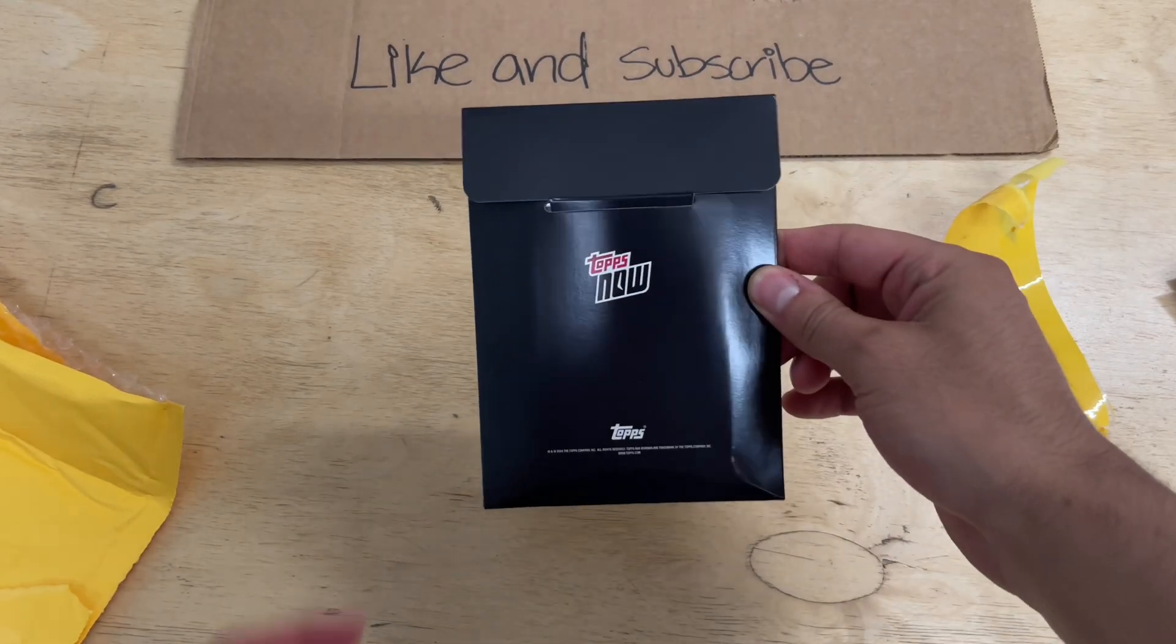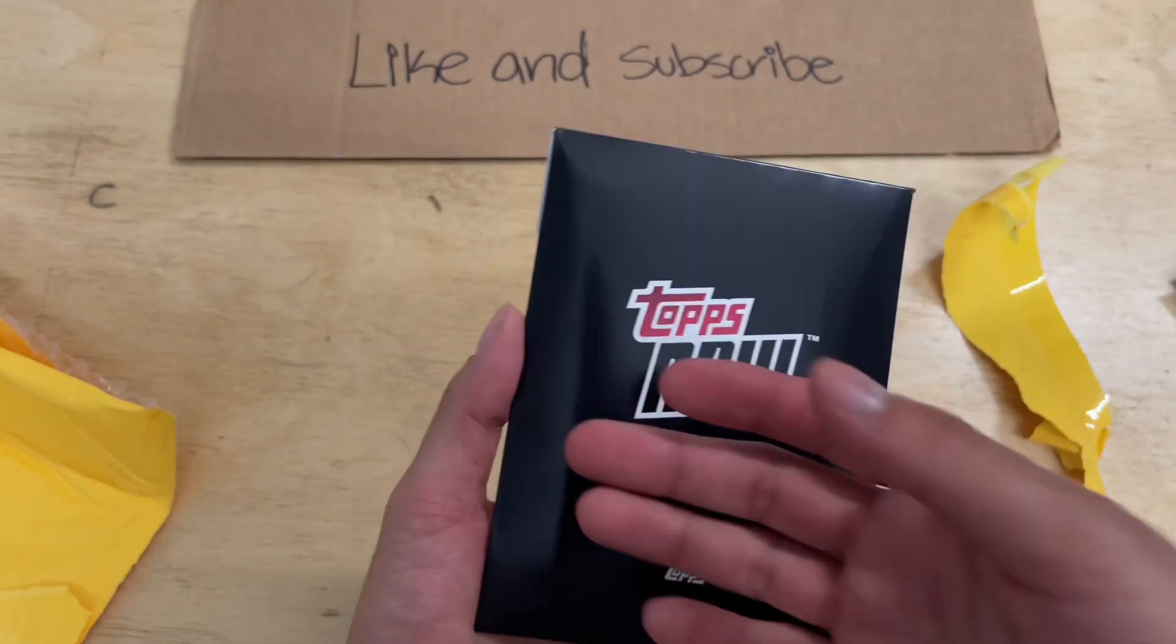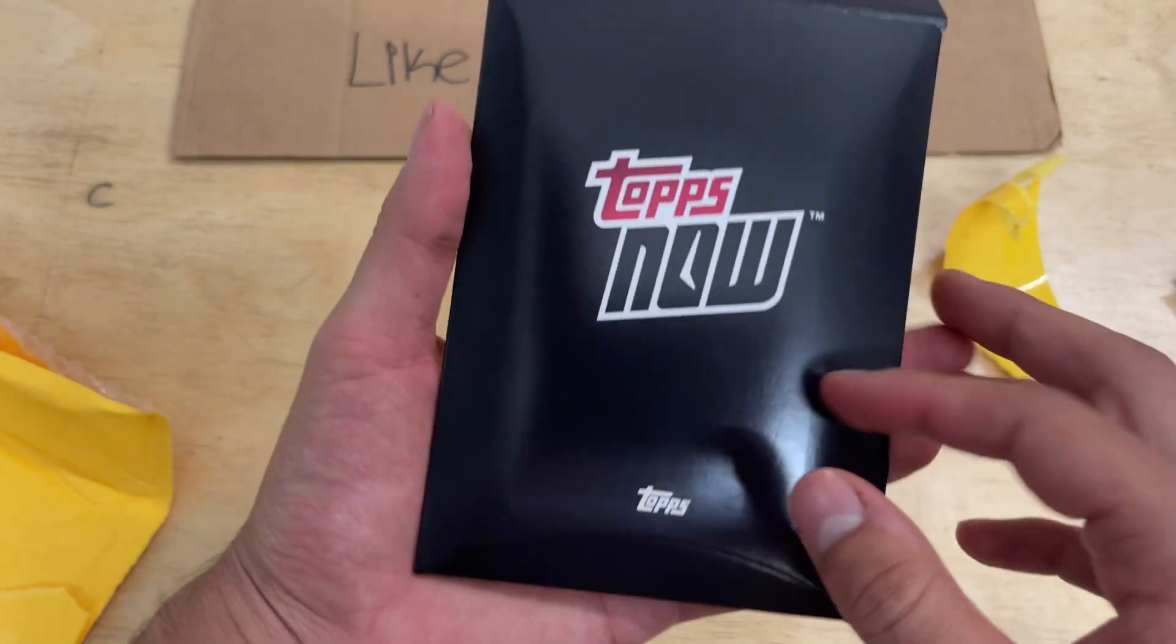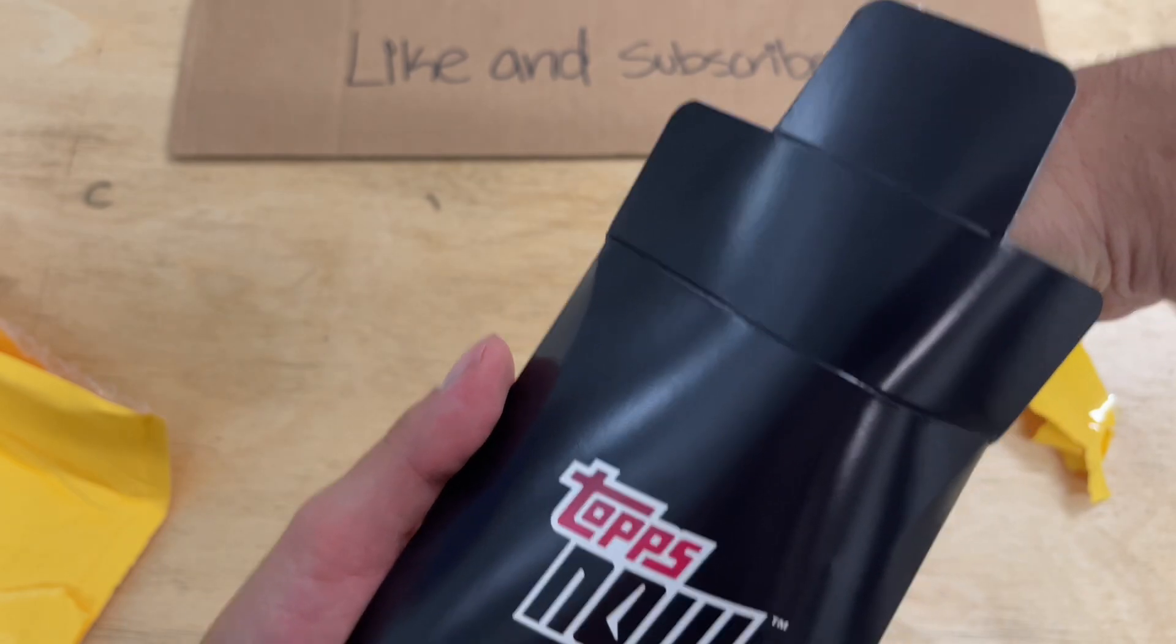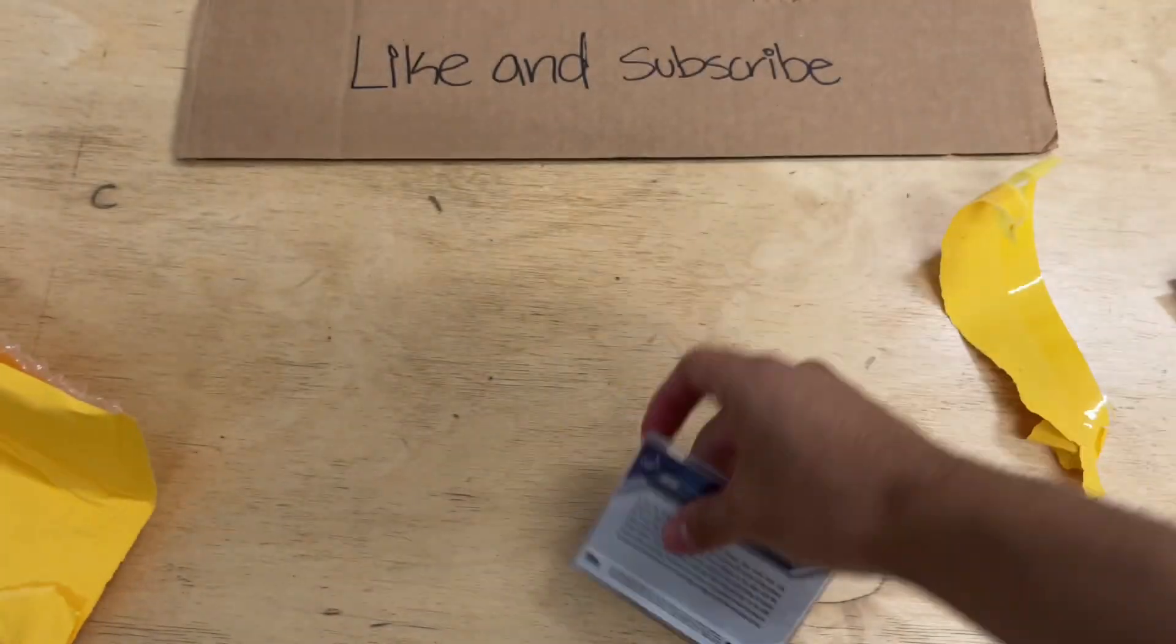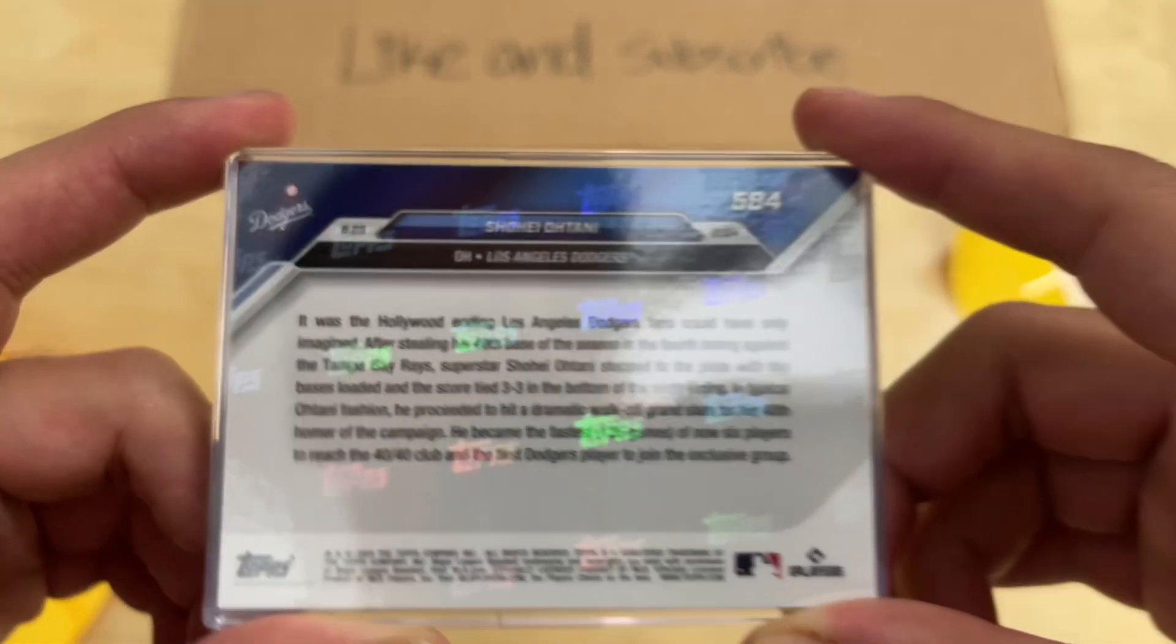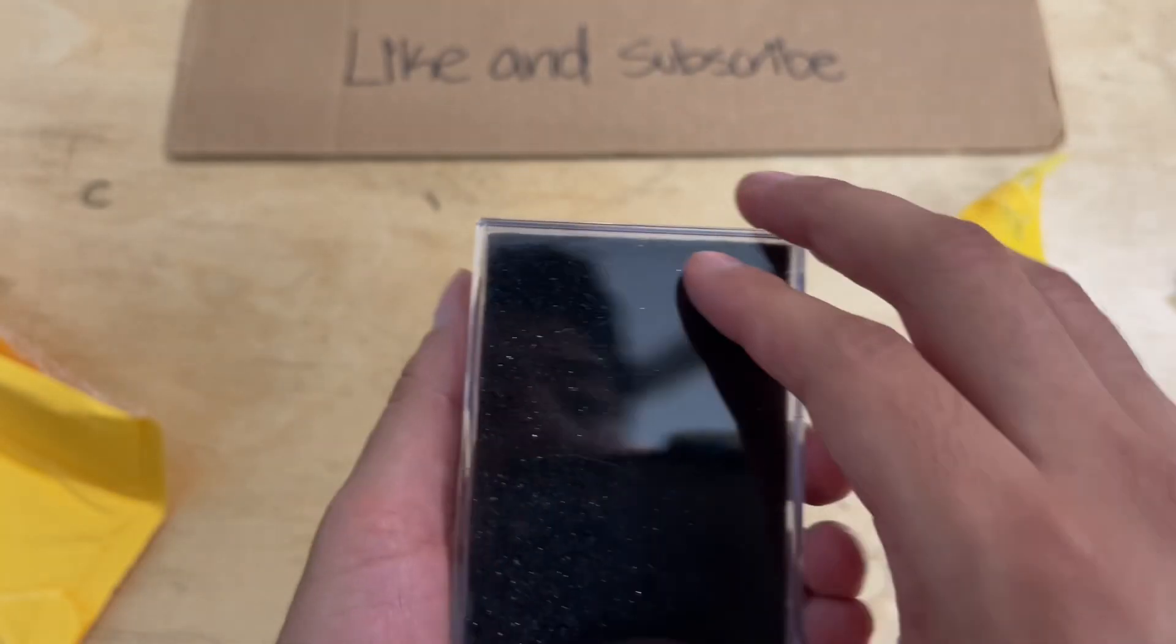Here it is, Topps Now, look at that. Guess what card is it, what's clear? We're gonna find out right now. Let me see the back first. Alright back show, hey Ohtani you see that. Let's clip it, oh it's covered.